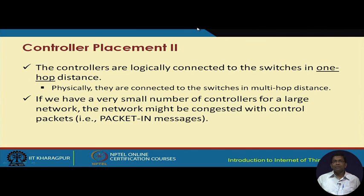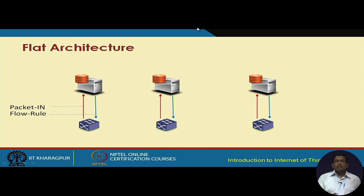Actually, physically, the controller and the switch can be multiple hops away — and typically they are multiple hops away. If we have a small number of controllers for a large network, the network might be congested with control packets, these packet-in messages. Looking at controller placement, there are different architectures for how and where to place the controller. The basic architecture is called the flat architecture.